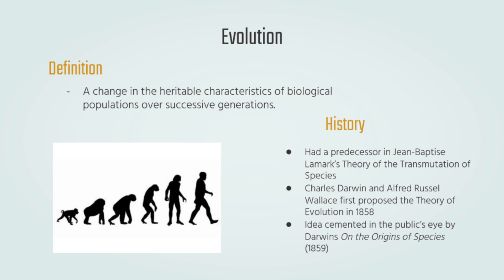Darwin stated that all species arose and developed through the natural selection of inherited variation that increased that organism's ability to survive. So unlike Lamarck, who believed in acquired characteristics, Darwin argued there were changes in the genetic makeup that was passed down from parent to offspring.